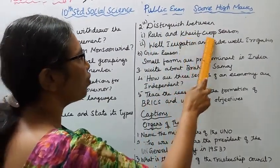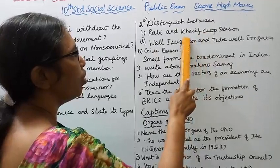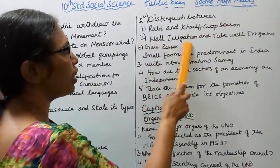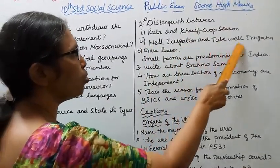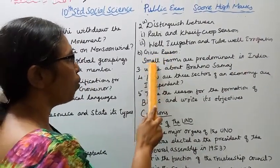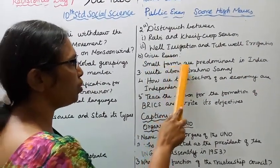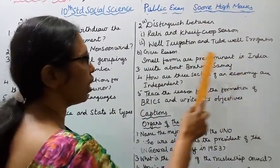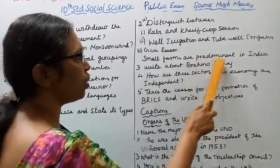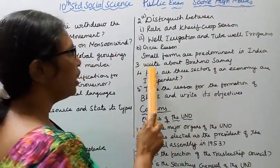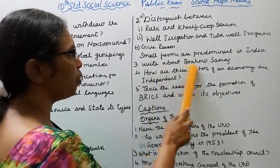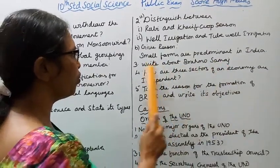Five marks — distinguish between: Rabi and Kharif crop seasons. Second: Well irrigation and tube well irrigation, giving reasons. Third: Small farms are predominant in India — give reasons.